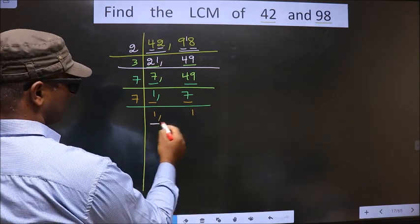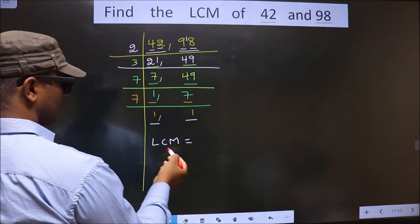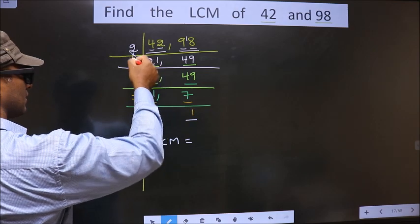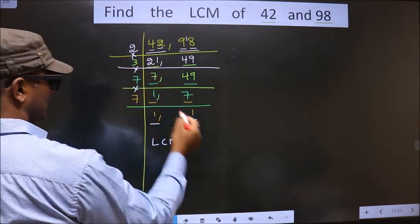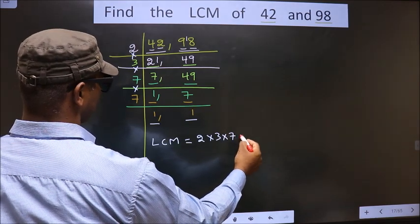So now we got 1 in both the places. So now our LCM is the product of these numbers. That is, 2 into 3 into 7 into 7.